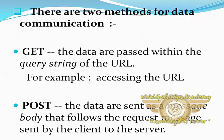There are four types or methods for data communication. First is GET and second is POST. In the GET method, data are passed within the query string of the URL. Accessing the URL is a GET method of communication. In the POST method, data are sent as a message body that follows the request message sent by the client to the server. This is known as the POST method of data communication.